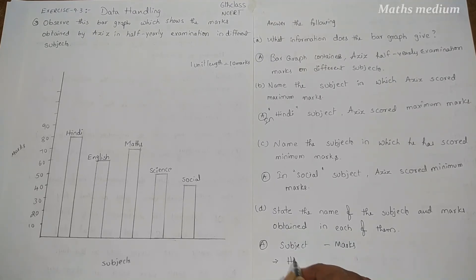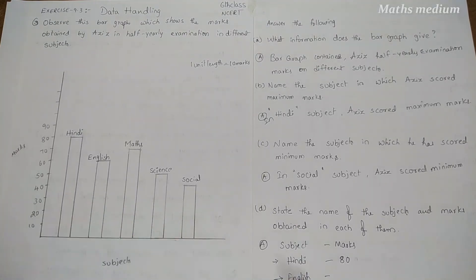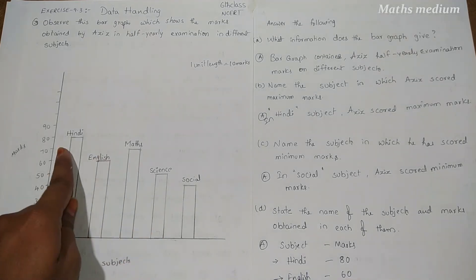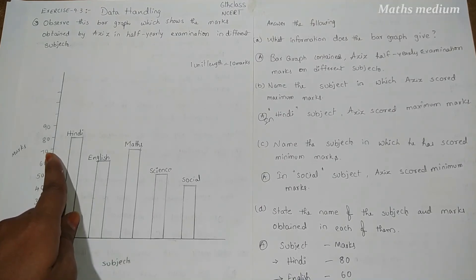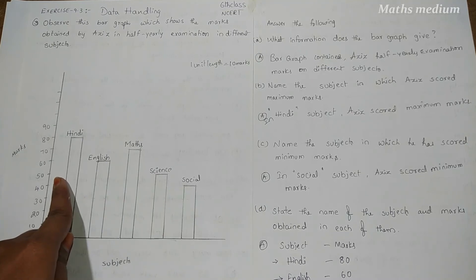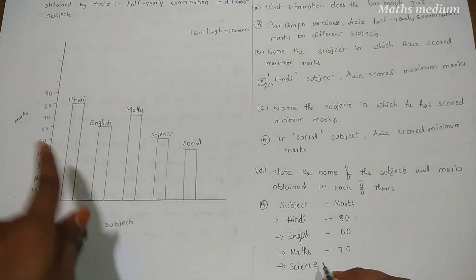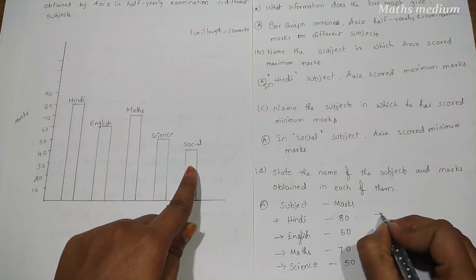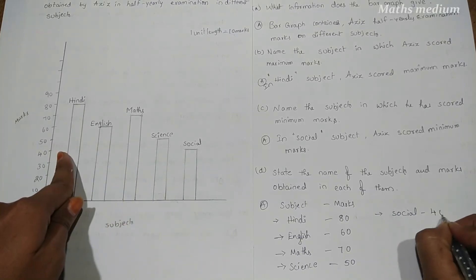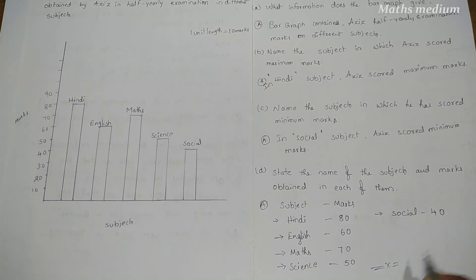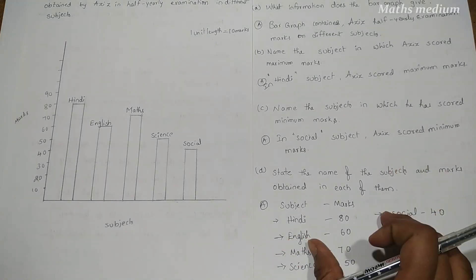One is Hindi with 80 marks. Next one is English with 60 marks. Third one is Maths with 70 marks. Fourth one is Science with 50 marks. And finally, Social with 40 marks. These are the subjects and marks from Aziz half yearly examination results.